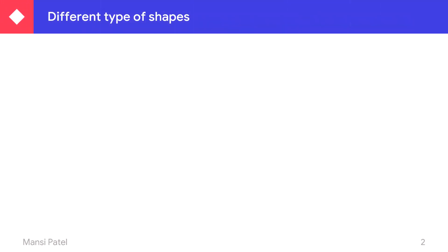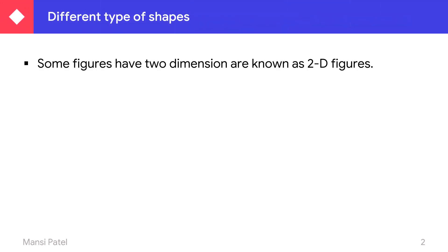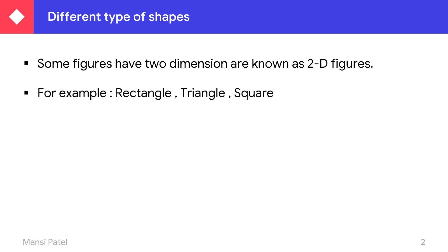First we revise the different types of shapes. Some figures have two dimensions and are known as 2D figures. The figures which have only two dimensions, two measurements — those figures are known as 2D figures. For example, rectangle, triangle, and square.